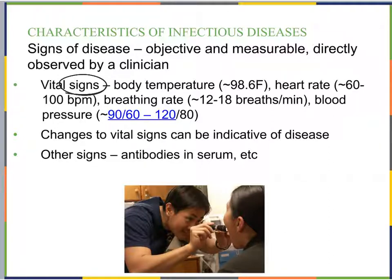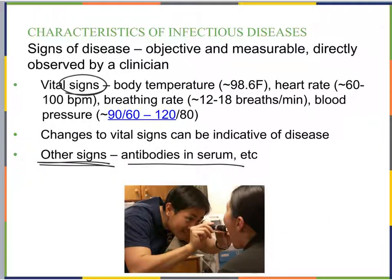Beyond vital signs, there are other signs such as antibodies in the serum, detected through lab tests. These are objective and measurable — a clinician can look at the lab result and say yes or no. That would be another sign of disease.